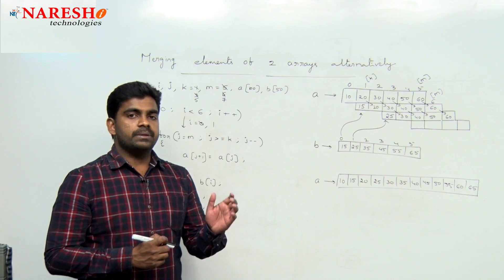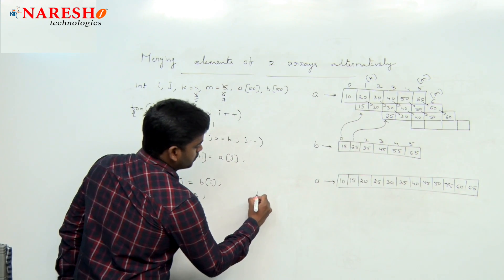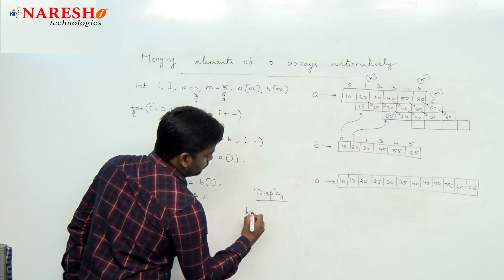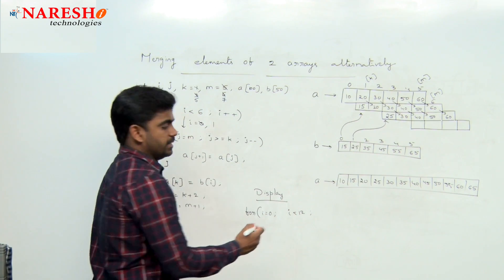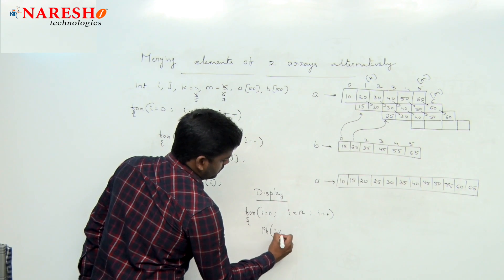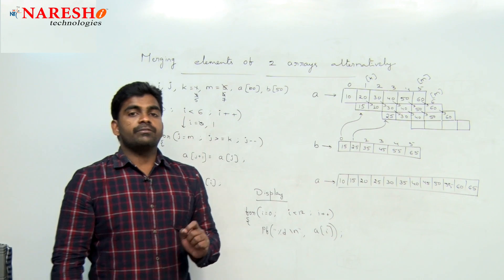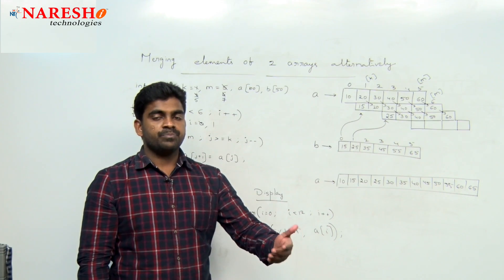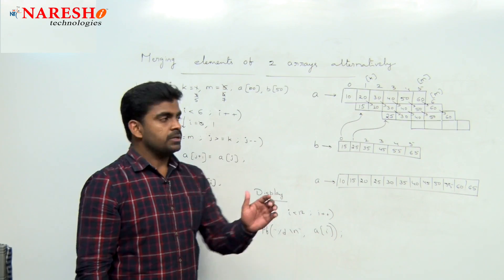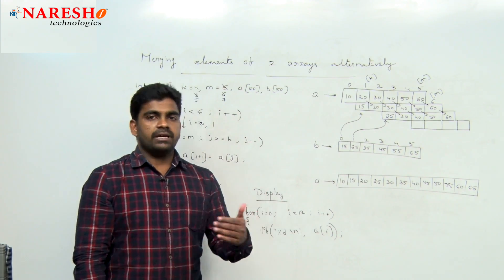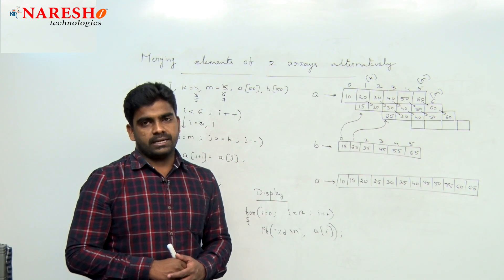This is the logic for inserting elements in alternative locations of another array. After writing this, to display the result just use one loop: i from 0, i less than 12 (total 12 elements, indices 0 to 11), i plus plus, and print a[i]. We are not taking the help of any third array — we are inserting the elements into the existing array only. For more videos, please subscribe to the Narish IT channel. Thank you all.